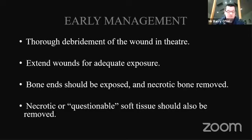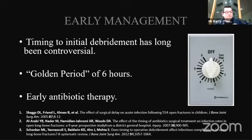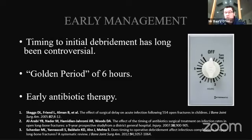For many years, we believed that the timing of the first debridement was important, and that debridement within six hours led to a lower incidence of infection and better outcomes overall. This six-hour period was known as the golden period, but it was based on what now seems to be relatively poor evidence. The more recent evidence suggests that whilst prompt surgical debridement is advisable, the early administration of appropriate antibiotics is much more important than the time to surgery. Also more important is the quality of the debridement.